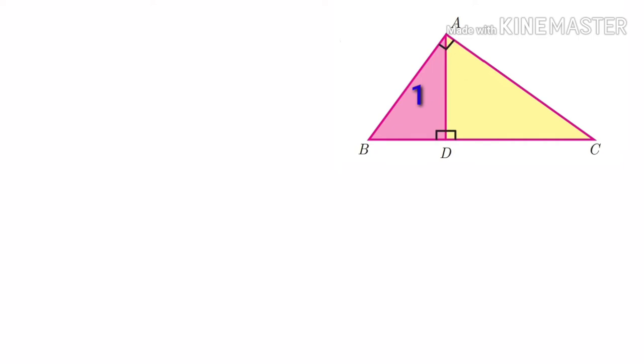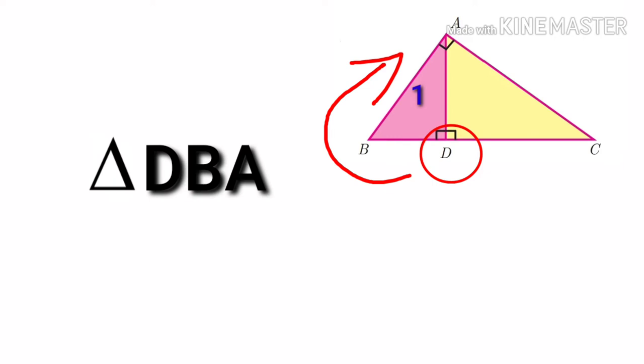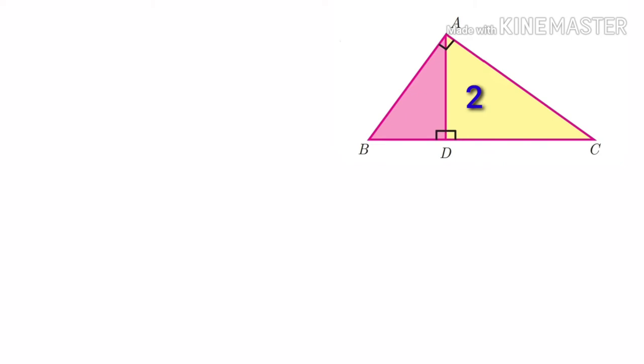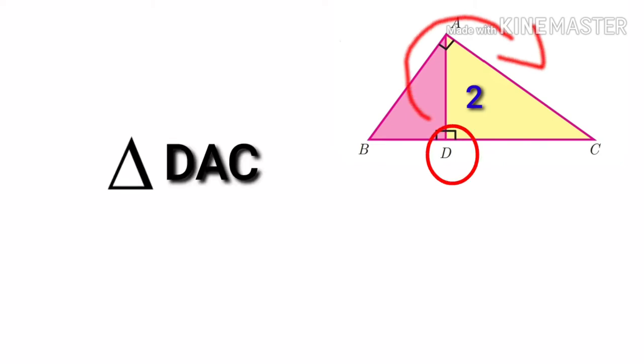So if we say first triangle, let us start from D in clockwise direction. So triangle DBA. So first triangle means triangle DBA. If we say second triangle, start from D in clockwise direction: DAC.